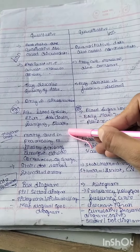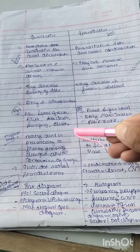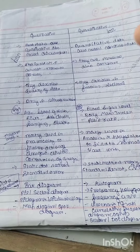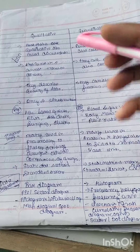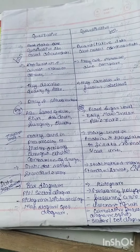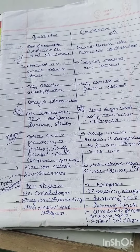They are mostly used in pharmacology to find the action of a drug. In pharmacy, we use qualitative data. Quantitative data is used in anatomy and physiology.